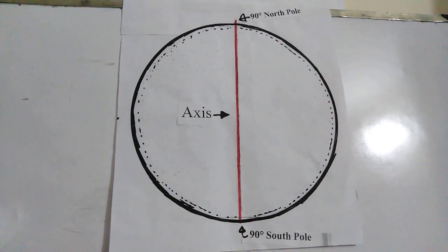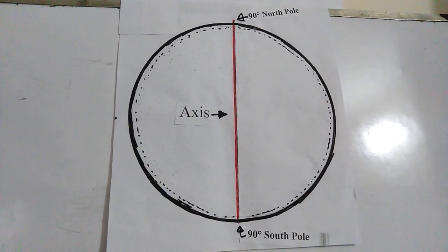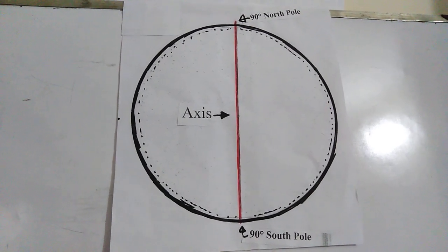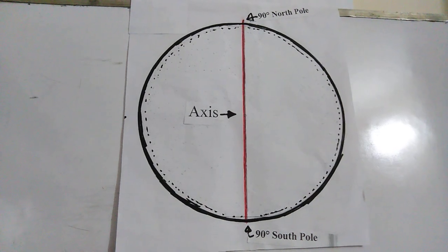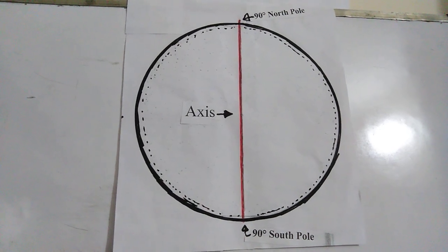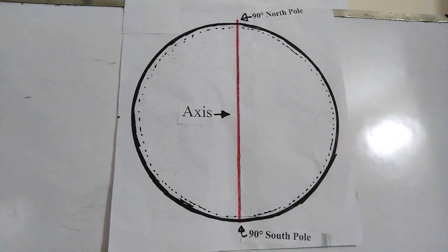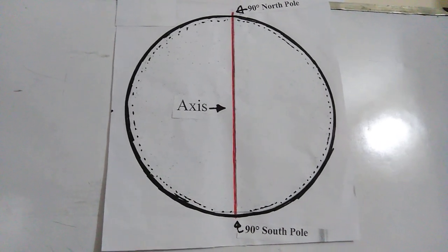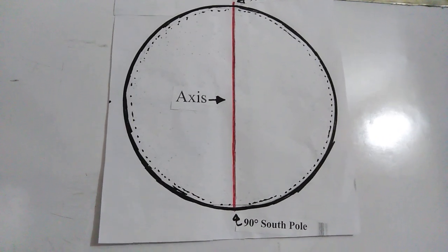Dear students, look at the figure again. In the figure, the red colored vertical line is the axis.